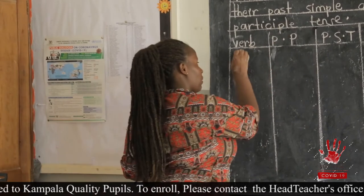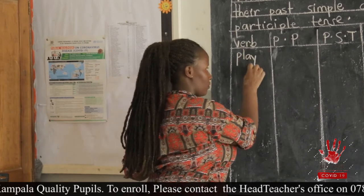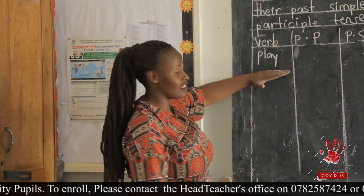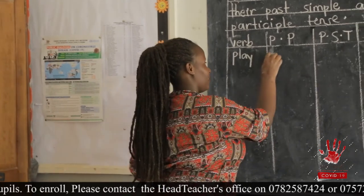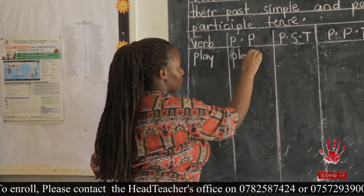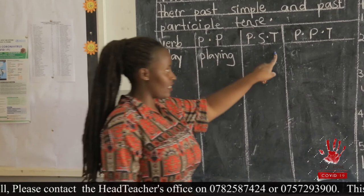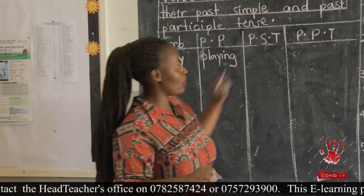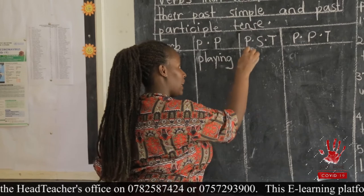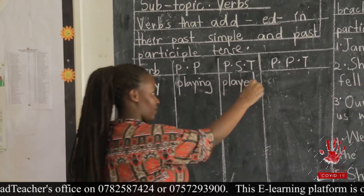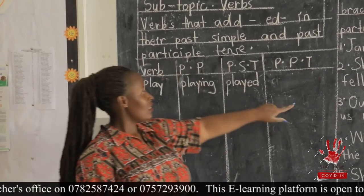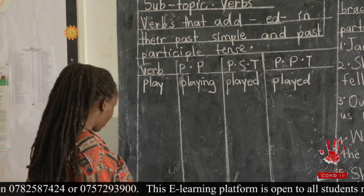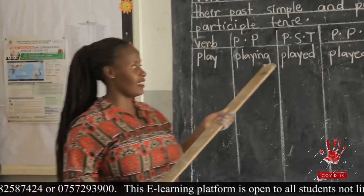Our first verb will be 'play.' When we change it to present participle, it becomes 'playing' — we don't change anything, we simply add ING. In the past simple tense, we remove the ING and add ED, and the word becomes 'played.' The same applies to the past participle — it also becomes 'played.' So the verb forms are: play, playing, played, played.